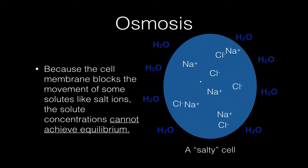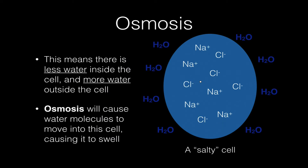So they can't get in or out. This means that there's less water inside the cell and more water outside the cell. You can think of it as there's a high concentration of water outside and a lower concentration of water on the inside in the cytoplasm, because these ions are taking up space that normally would be taken up by the water.